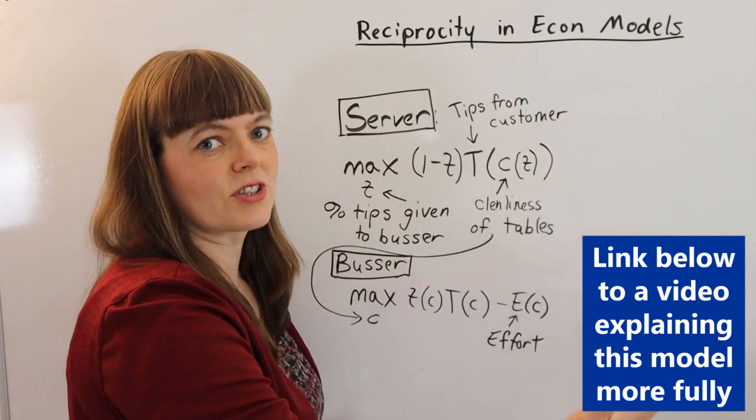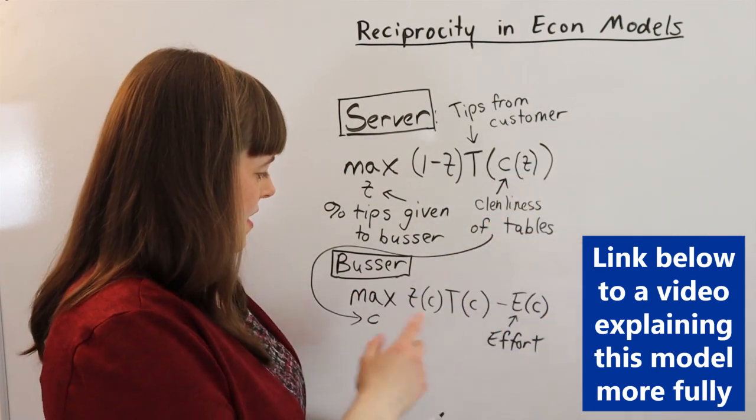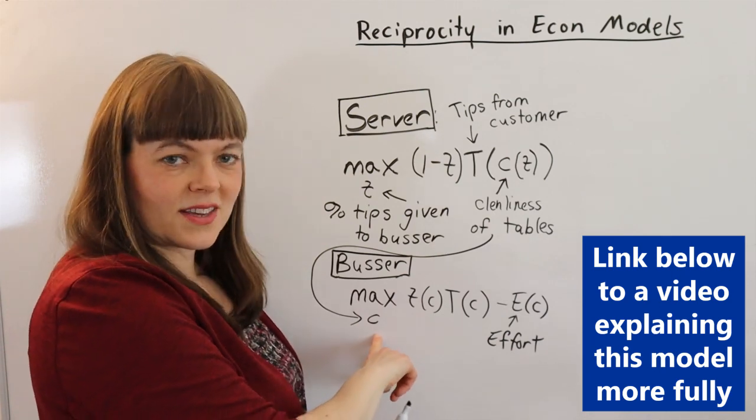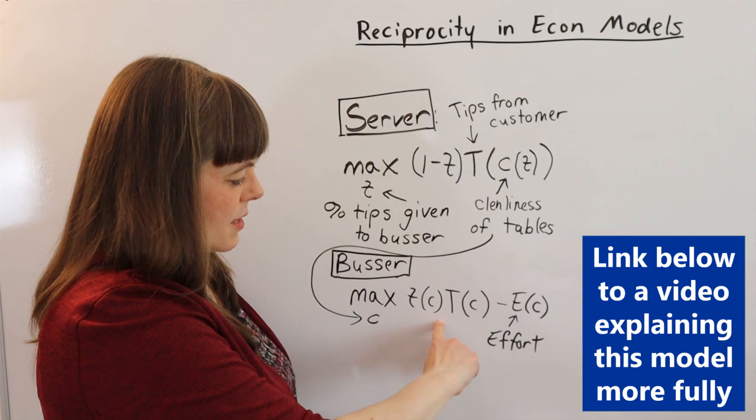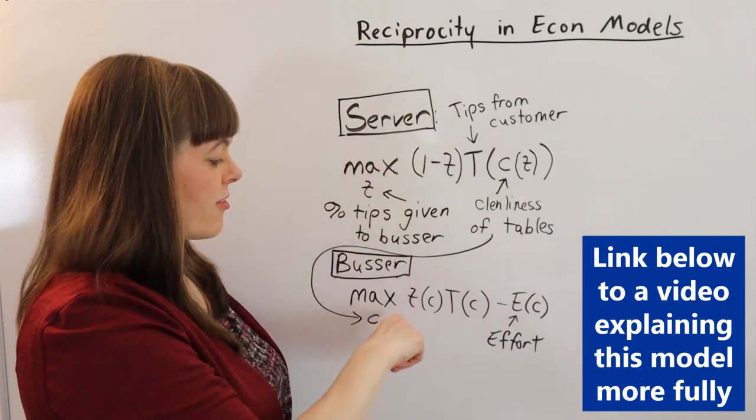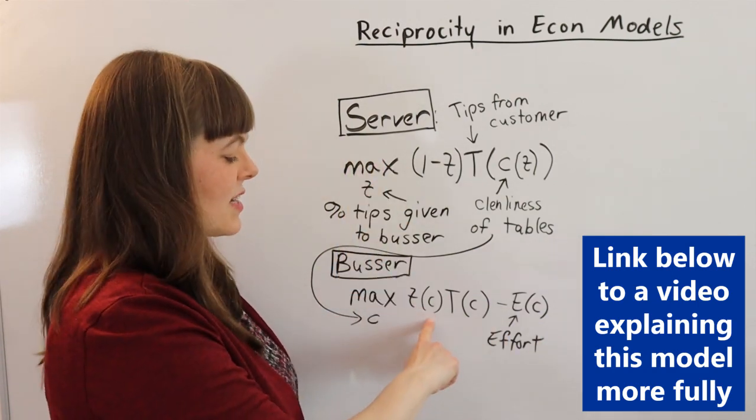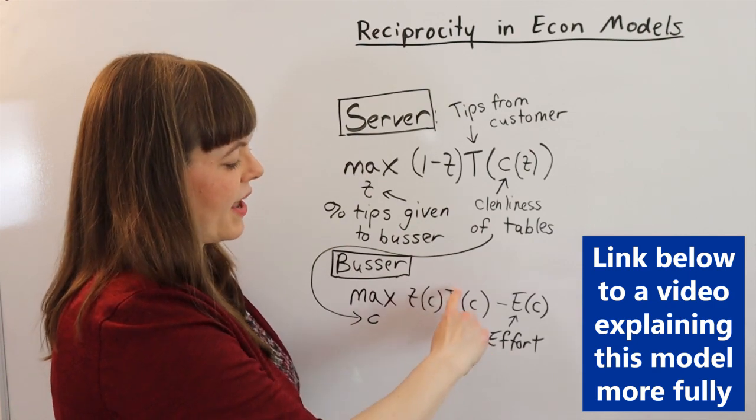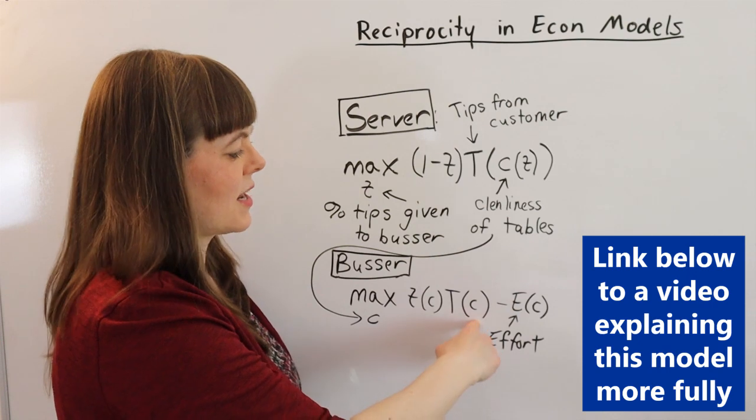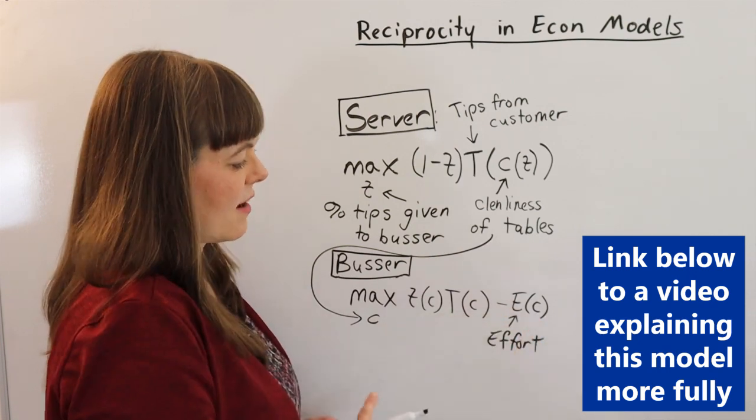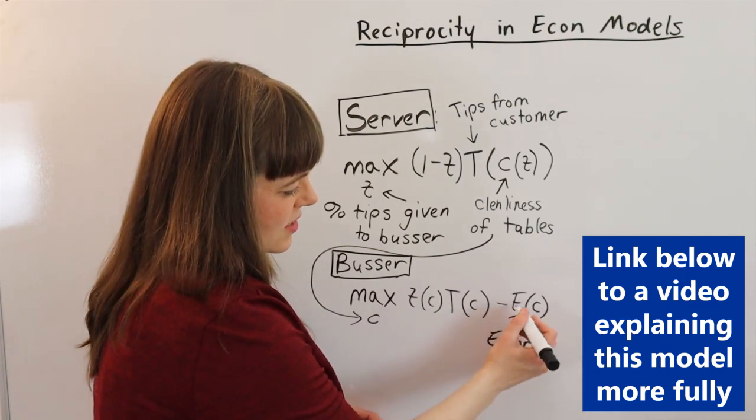Now the busser is deciding how clean to make the tables, and the busser's benefit is tips, which depend on how clean he makes the tables. That's going to be multiplied by the tips that she gets, which depend on how clean he makes the tables. And his cost is effort.